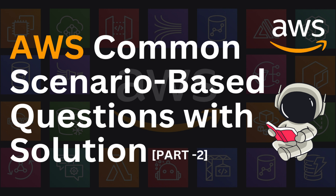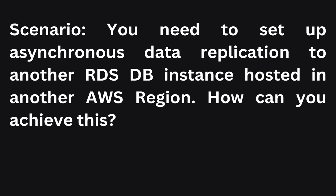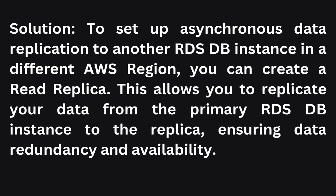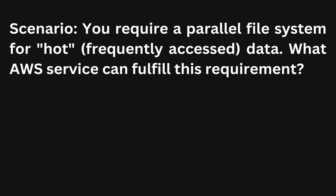The first scenario: you need to set up asynchronous data replication to another RDS database instance hosted in another AWS region. How can you achieve this? The solution is to create a read replica. This is important — the read replica allows you to replicate data from a primary RDS instance to the replica, ensuring data redundancy and availability.